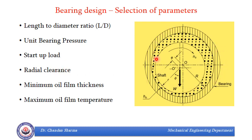Next is radial clearance. This is the bearing and this is the journal. The difference in the diameter of bearing and journal is called diametral clearance, and half of that is called radial clearance. Then next is minimum film thickness, H0, which is the minimum film thickness present between the bearing and journal. The last parameter is maximum oil film temperature, which is the temperature of the oil between the journal and the bearing.